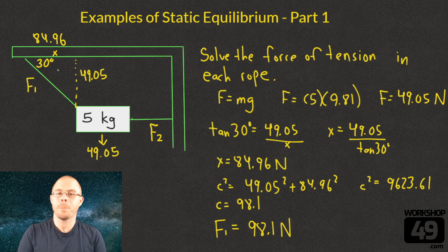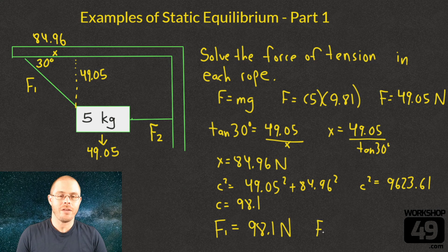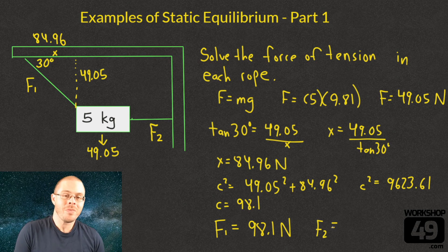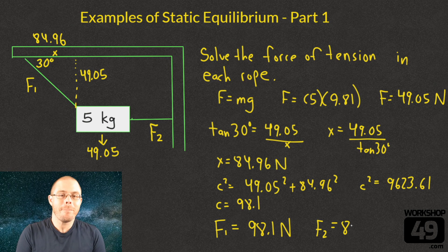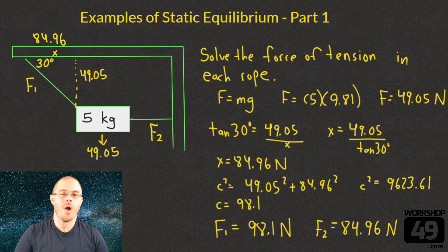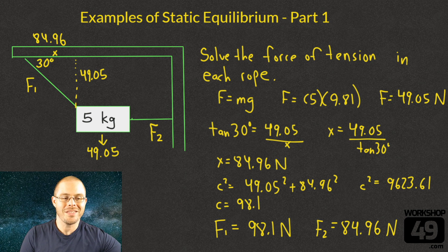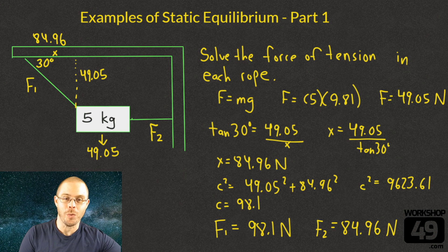But how do we get force 2? It has to cancel that left movement, and the only thing that F2 does is pulls to the right, which means that force 2 must be equal to that x component. It is also 84.96 newtons, and now our up-down is cancelled, our left right is cancelled, and this system is at static equilibrium.